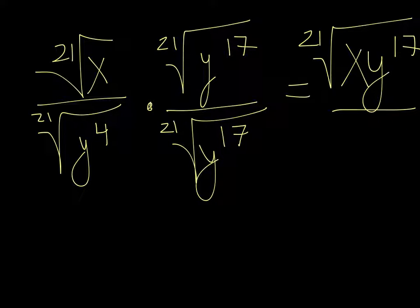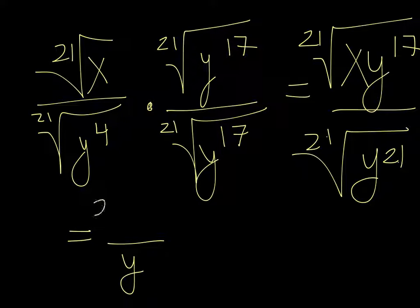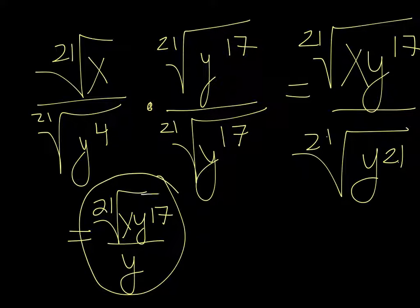And in the bottom, same thing. It's going to be the 21st root of y to the 21st. However, the 21st root and the power of 21 cancel out. And I get just y on the bottom and the 21st root of x, y to the 17th on the top. So I've rationalized my denominator and I've combined everything.